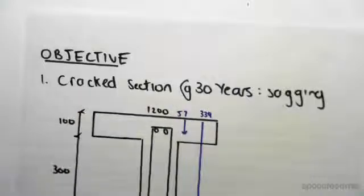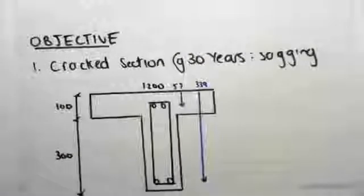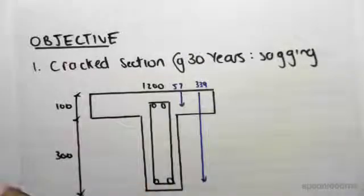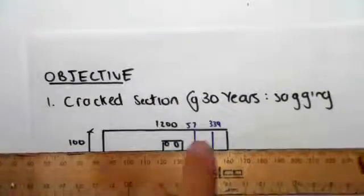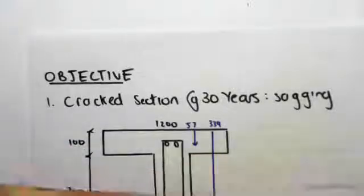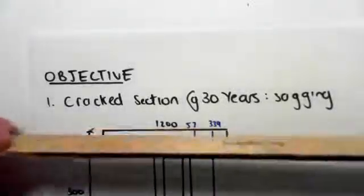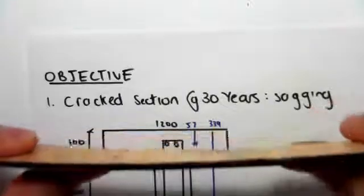So let's go. The way it works is that we assume a neutral axis depth. We're going to assume ours to be in the flange over here. The reason we do this is because this is sagging.